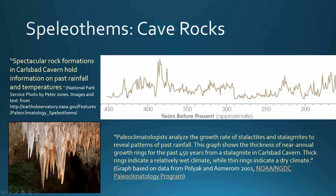You can see here on this graph how there were different levels of moisture present, and that caused the speleothems to grow either more quickly or more slowly, depending on how much water was present. So when we see a peak, that means that there was a lot of rock added to the speleothem at that point in time, and so there was a lot of moisture above the cave at that time.